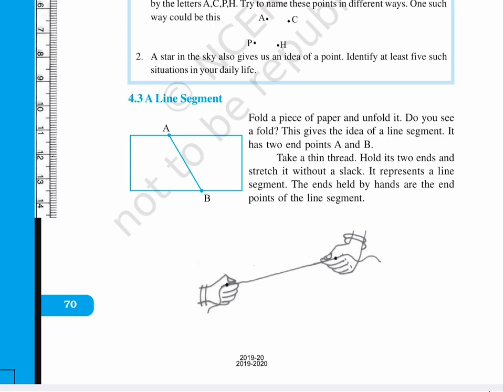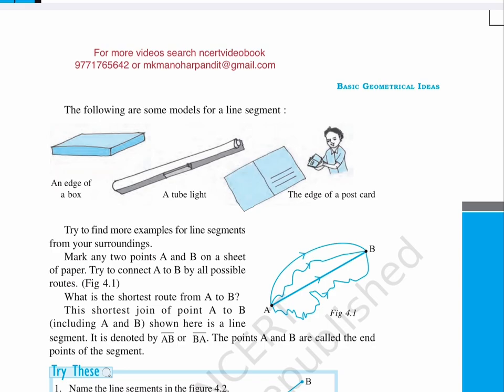Page 71. The following are some models for a line segment. An edge of a box, a tube light, the edge of a postcard. Try to find more examples for line segments from your surroundings.